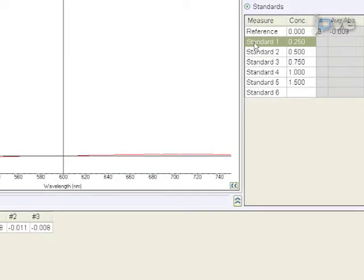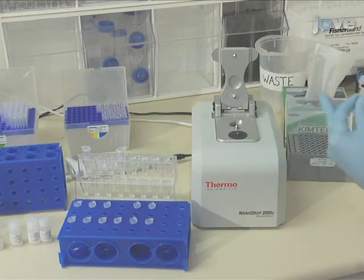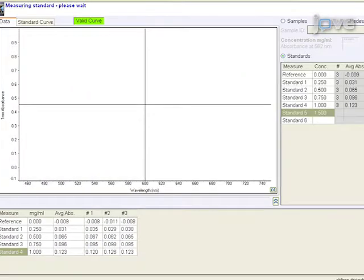Under the Standards tab, highlight the desired standard and pipet 2 µL of the desired standard onto the lower pedestal. Lower the arm and click Measure. Repeat the process for all standards.